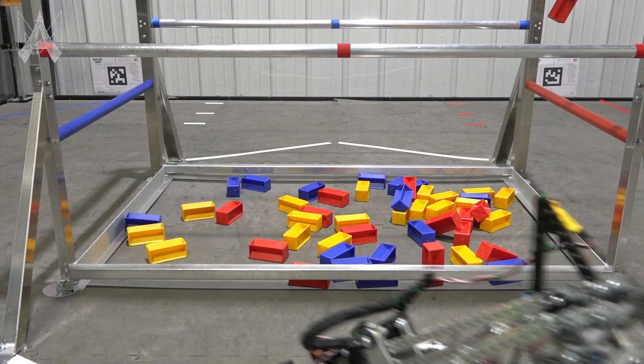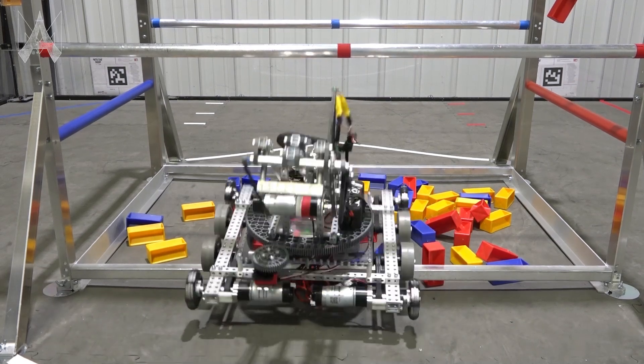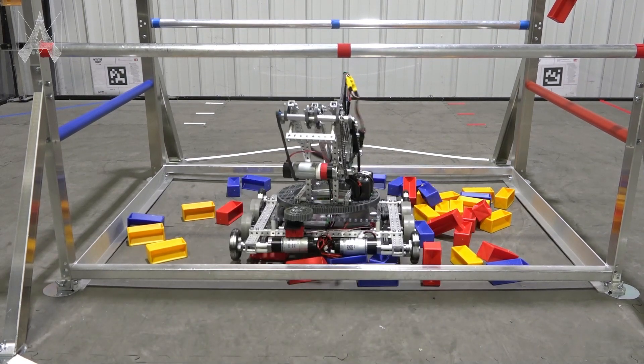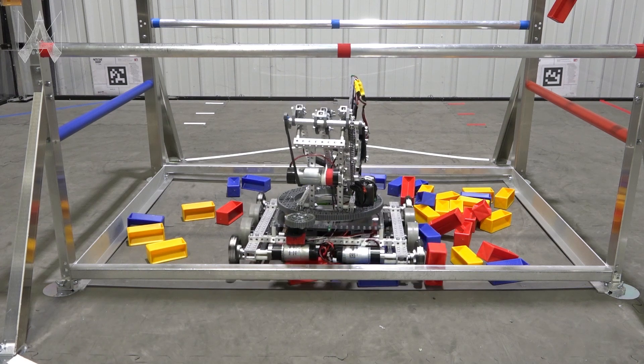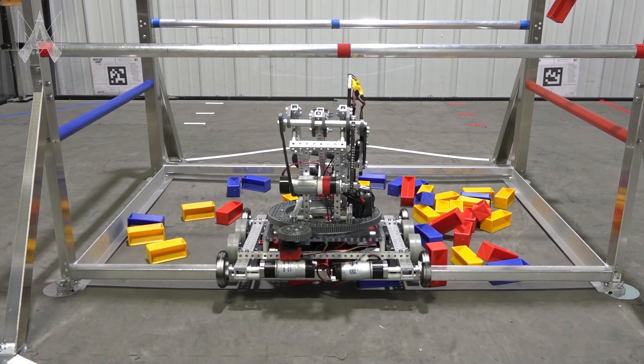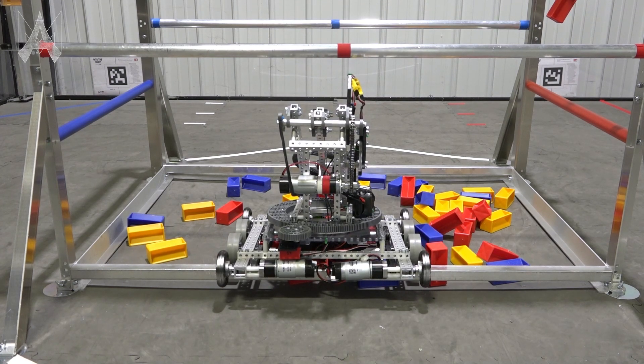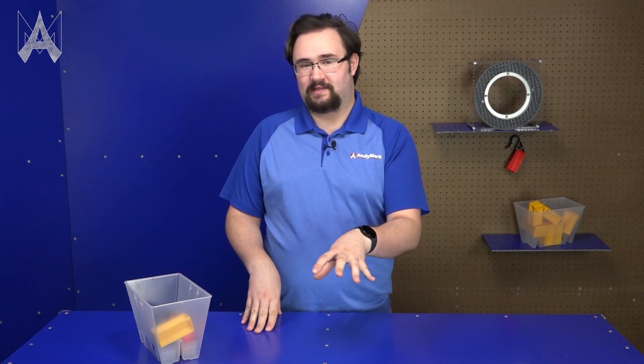You can fully enter the submersible, but keep in mind the rules about endgame in the last 30 seconds and that this will require a different robot design than many other robots you'll see this year. Going up over the metal bit into the submersible will typically put you on top of the samples that are inside, and you'll have to find a way to either get off of those or be able to drive around in the pile.